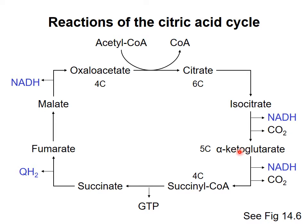Then a similar reaction happens again, oxidizing another carbon to CO2 and producing NADH. We're left with a four carbon succinyl unit attached to our old friend coenzyme A through a thioester linkage. When this linkage is broken to produce free succinate, enough energy is released to produce a GTP molecule, which is an ATP equivalent. The last three reactions of the cycle include two oxidation reactions in which electrons are removed from carbon and used to make QH2 and NADH.